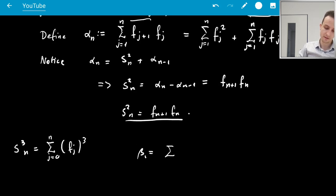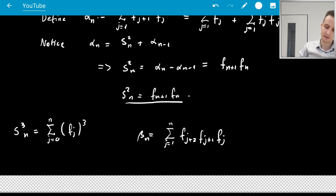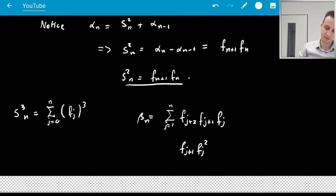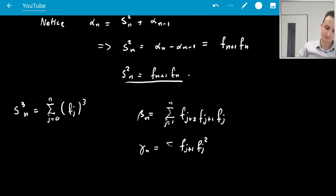And you also want to look at differences of the form. Let's say beta_n is the sum from j equals 1 to n of F_j+2 times F_j+1 times F_j, things like that. And then you'd also want F_j+1 times F_j squared, for maybe gamma_n, if you wish to call it that. You play with these, and eventually you do get an explicit formula for S_3n, in terms of the higher-up Fibonacci numbers, but it doesn't look as nice as these do.